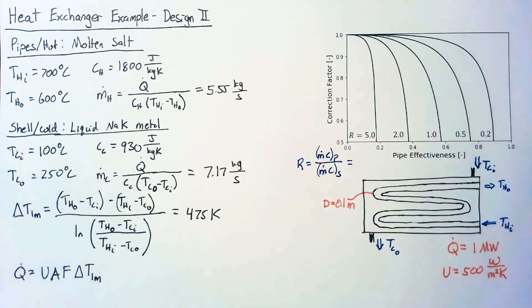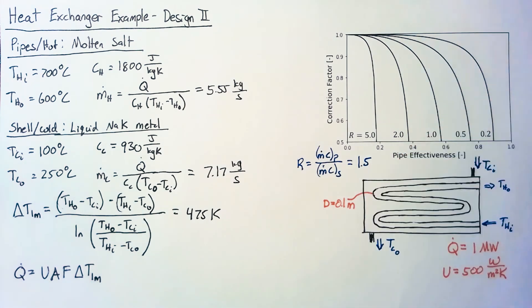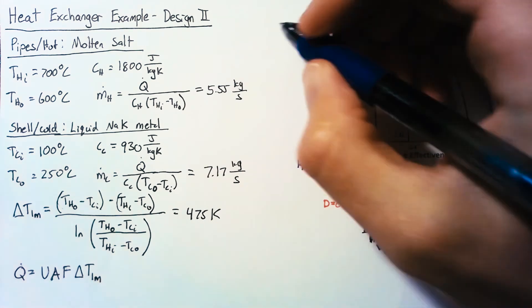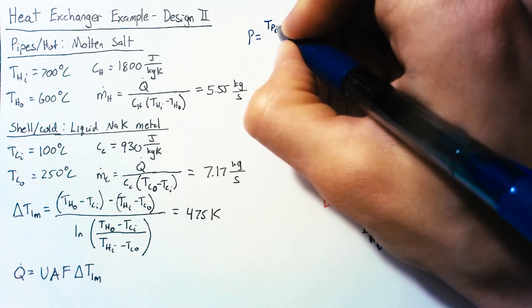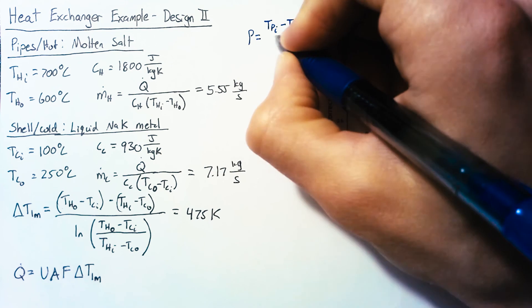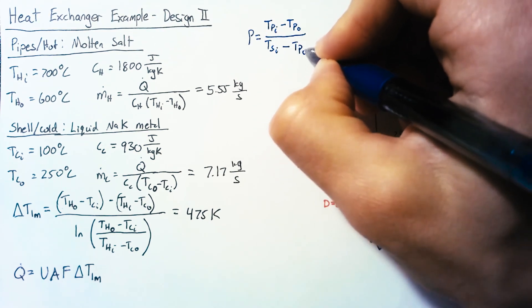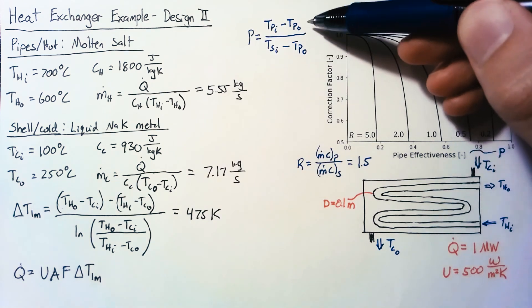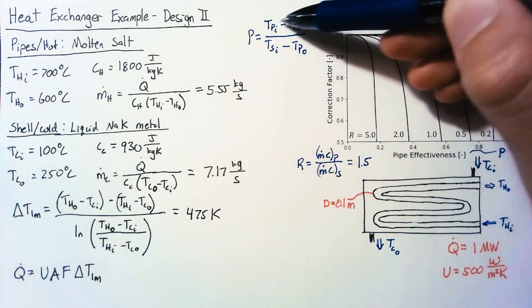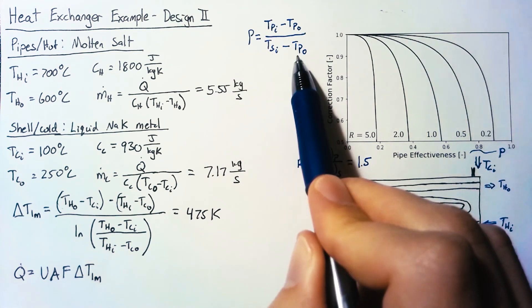Our R value is going to be the ratio of our total heat capacity for the pipe divided by that in the shell. And for our example here, that ratio is 1.5. Now the pipe effectiveness, I'm going to call P, and P is equal to the pipe inlet temperature minus the pipe outlet temperature divided by the shell inlet temperature minus the pipe outlet temperature. I'm calling this the effectiveness because this is essentially a ratio of the total heat transfer in the pipe compared to the maximum possible heat transfer in the pipe.